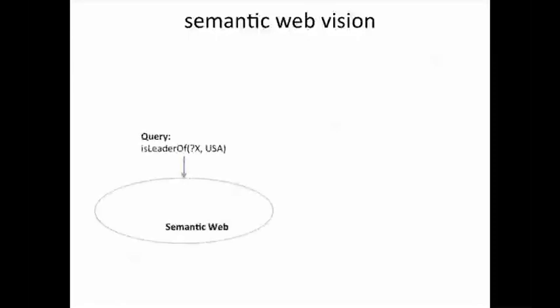Let's look at the vision that Tim Berners-Lee espoused back in 2000 called the Semantic Web, which essentially puts together some of the ideas we've been discussing. To answer a query like 'who is the leader of USA,' a semantic web or web intelligence system incorporating semantics would proceed as follows.